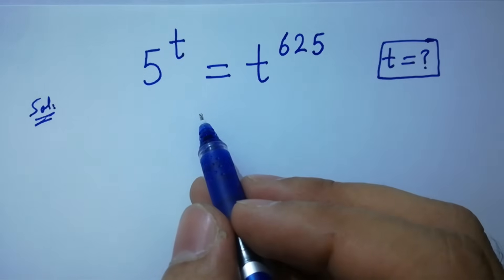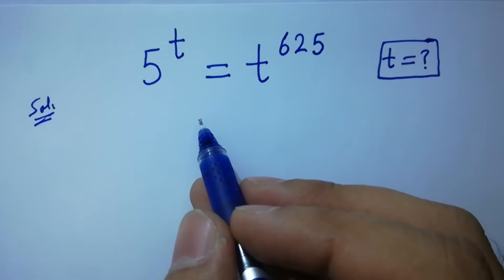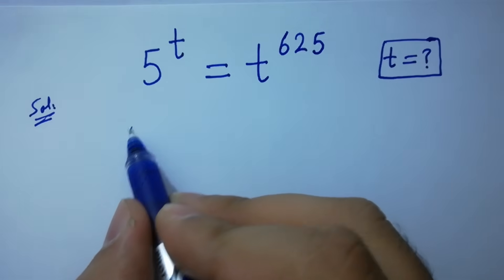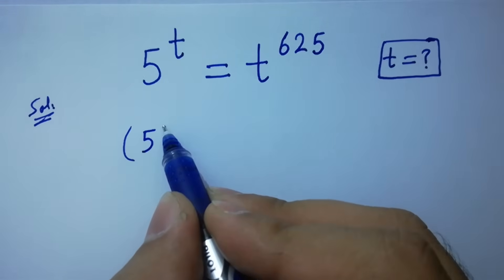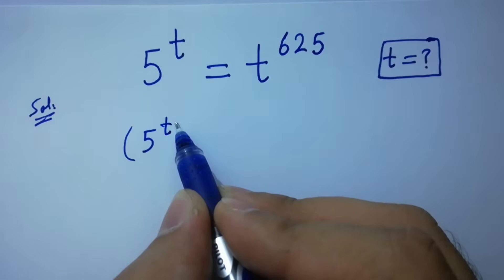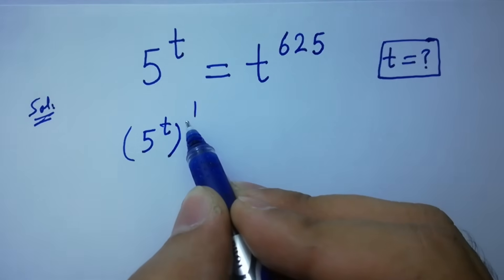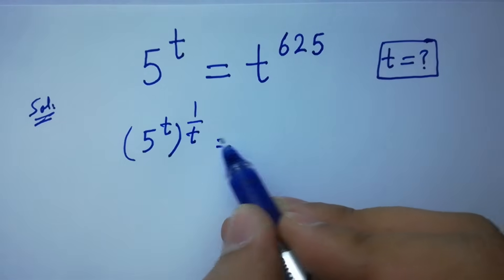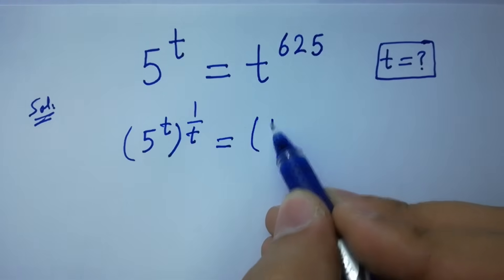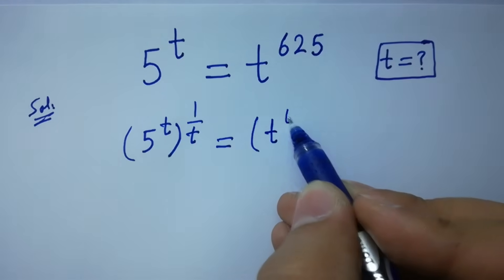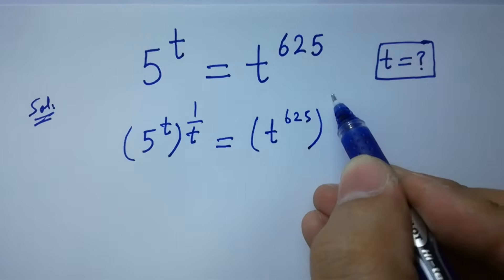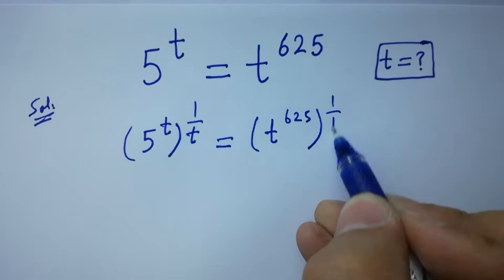To solve this, take power 1 over t on both sides. So 5 to the power t, to the whole power 1 over t, equals t to the power 625, to the whole power 1 over t.